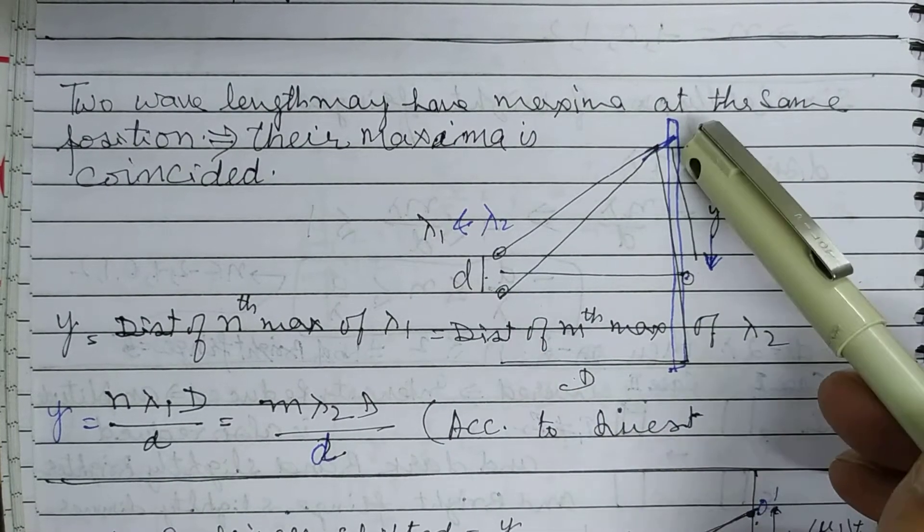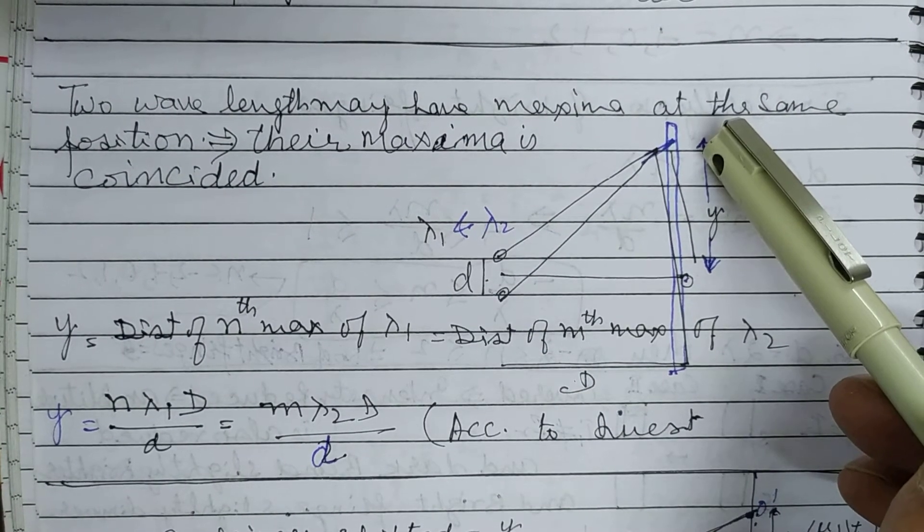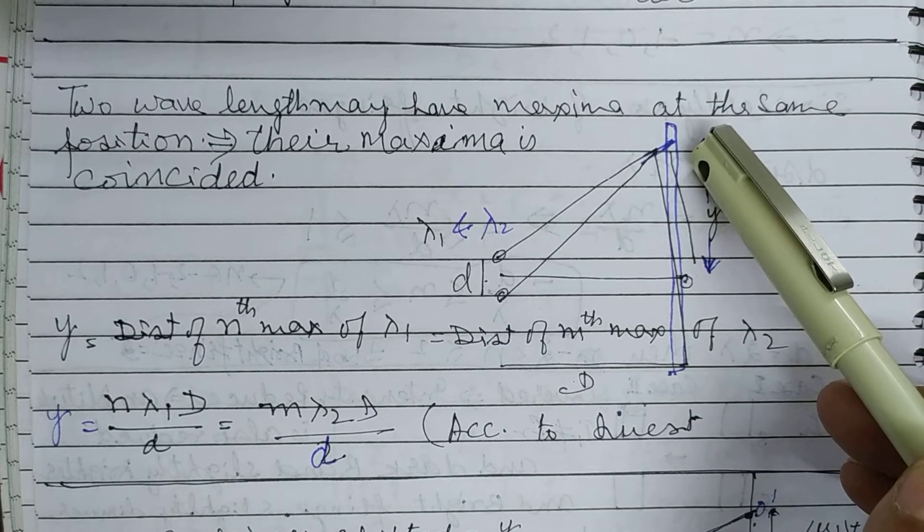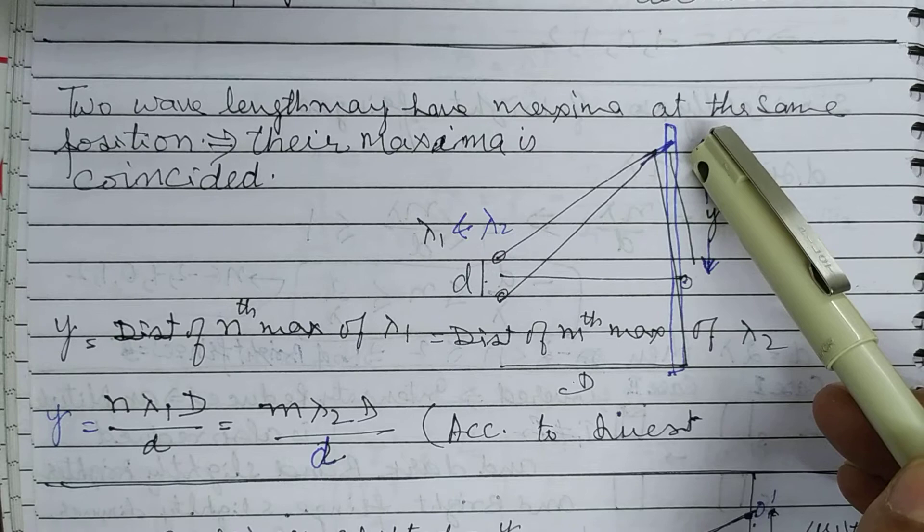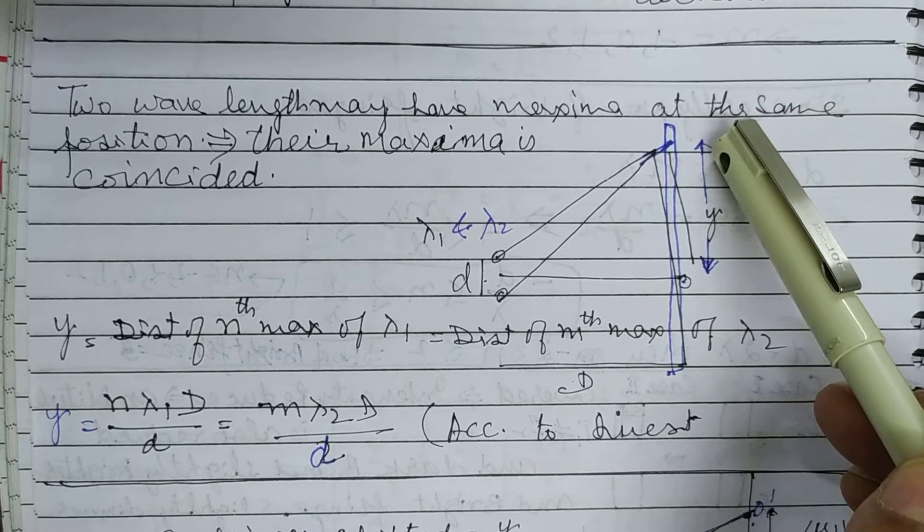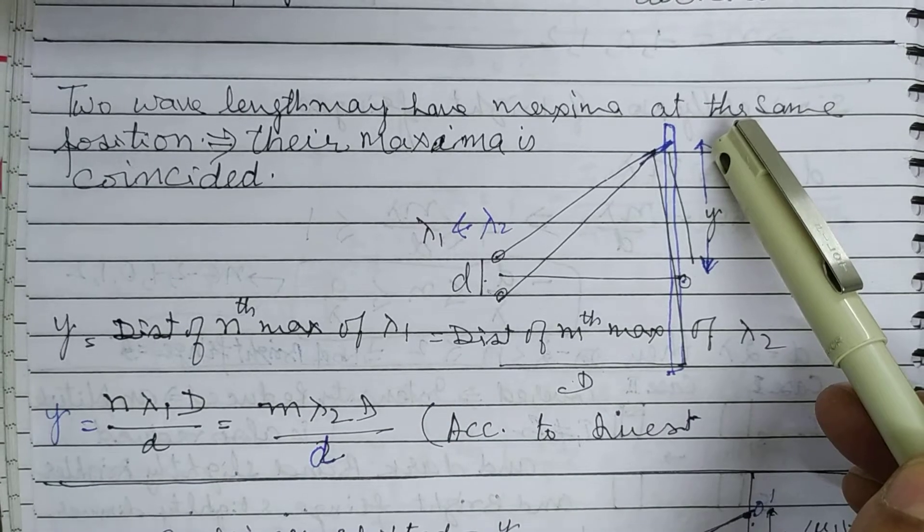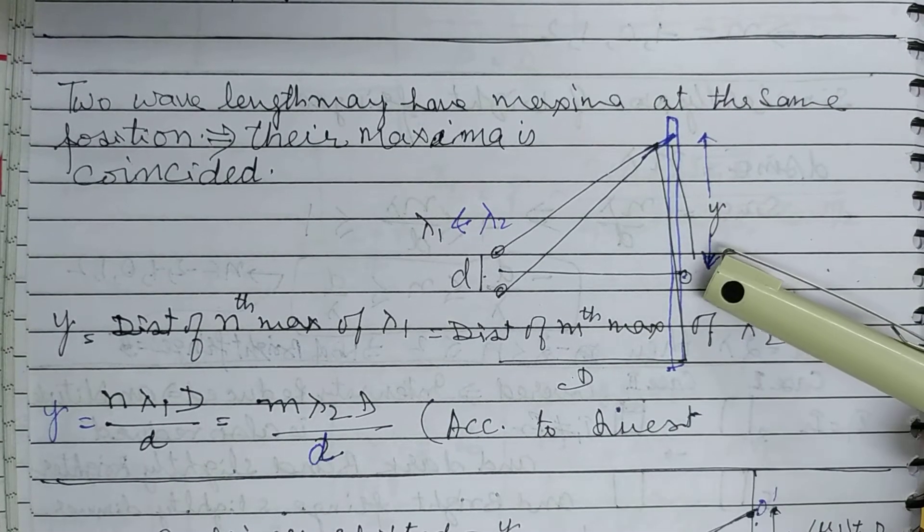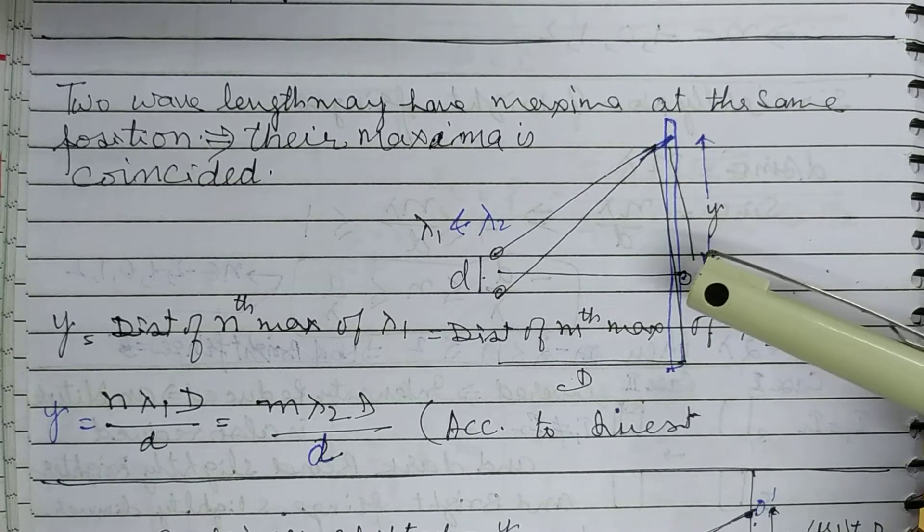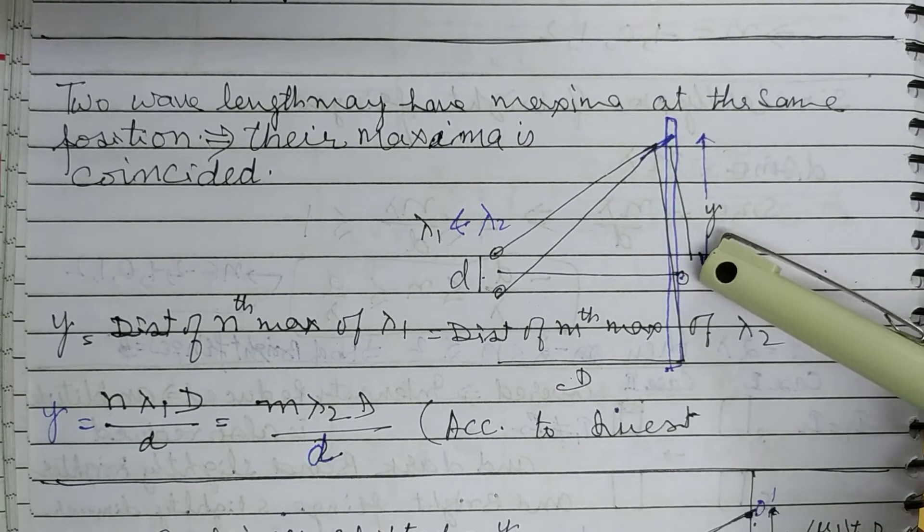One wave at a certain position has a bright band forming, that is the nth bright band. The other wave at the same position has a bright band forming, that is the mth bright band. Same point per dono bright bands ban rahi hai, both are coincided. So what is the y? Both are at distance y from the central bright fringe.